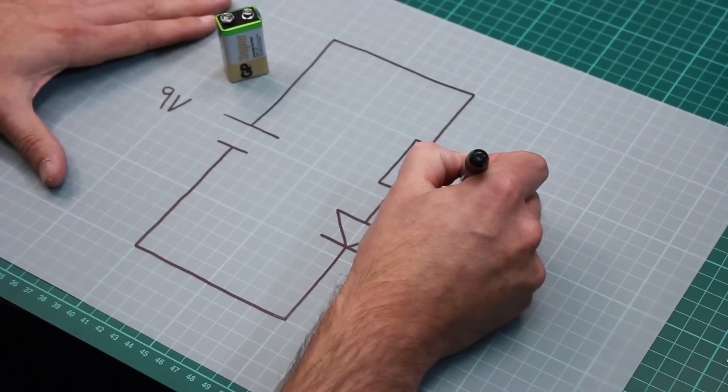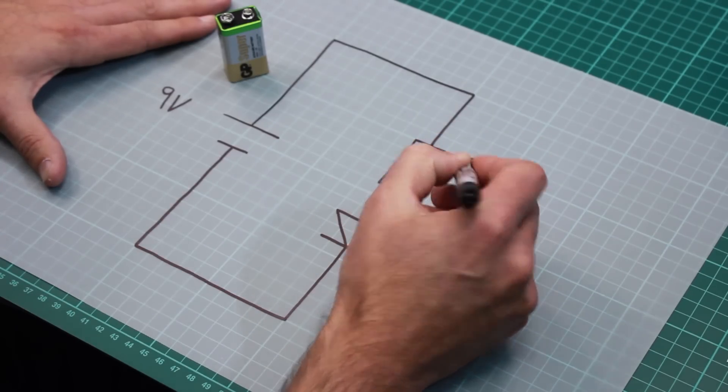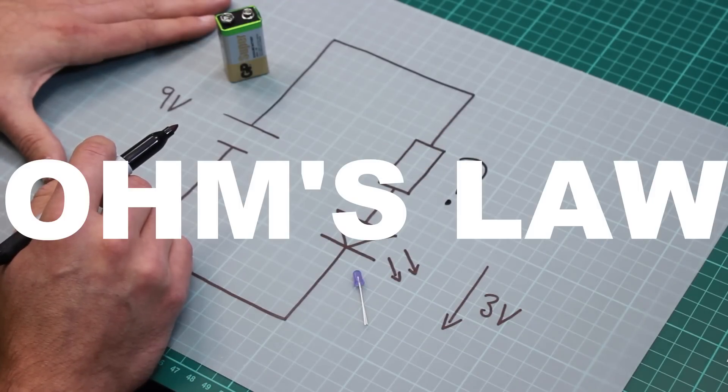How do we calculate the value of this resistor? We use Ohm's law.